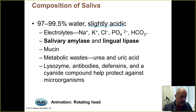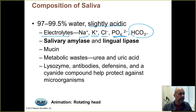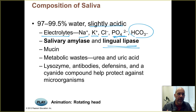There are lots of electrolytes in saliva: things like sodium, potassium, chloride, phosphate ions, and bicarbonate — the same bicarbonate we discussed when covering the respiratory system. Also, you have lingual lipase, because the tongue produces that enzyme that helps you start breaking down the lipids you're consuming.